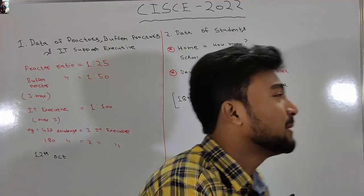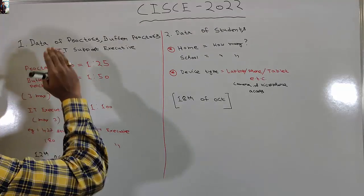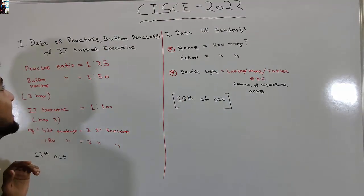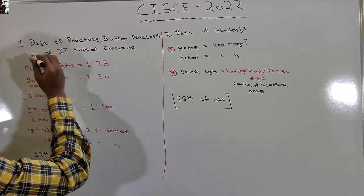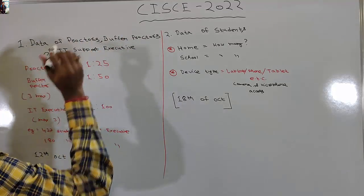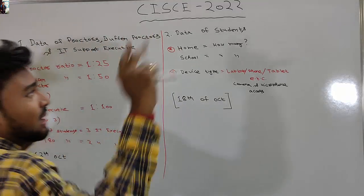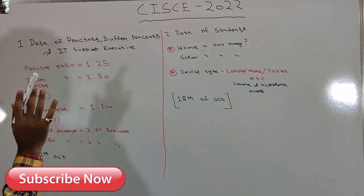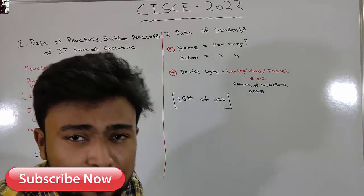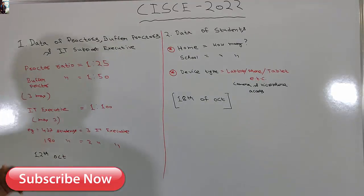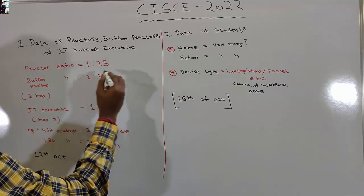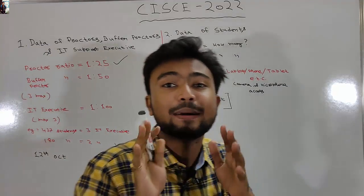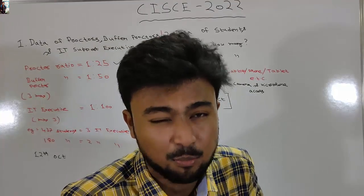Now, there are two types of data required by the CIC council. Number one is data of proctors, buffer proctors, and IT supporters. Number two is data of students. Regarding proctors: one is to twenty-five is the proctor ratio, meaning one proctor is required for every 25 students. This is a very important and clear requirement.